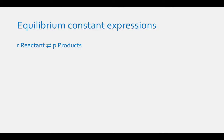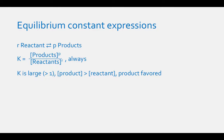For a generic equation where a coefficient r and a reactant is in equilibrium with a coefficient p and a product, the equilibrium constant expression equals the concentration of the products raised to their coefficient p divided by the concentration of the reactants raised to their coefficient r. Since the equilibrium constant equals products over reactants, if K is large — greater than 1 — the concentration of products is greater than the concentration of reactants, and we say that the reaction is products favored. This means the reaction will tend to go in the forward direction and create more products.